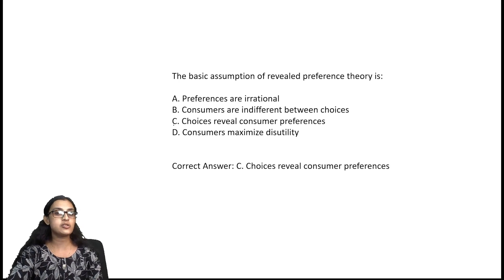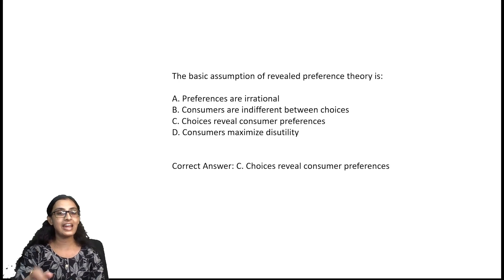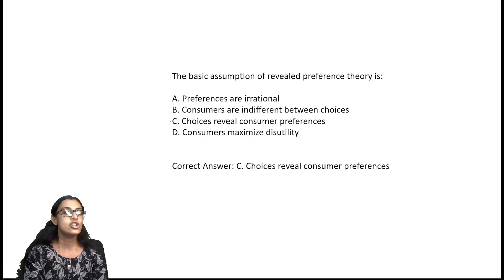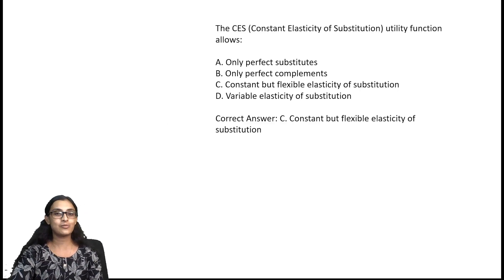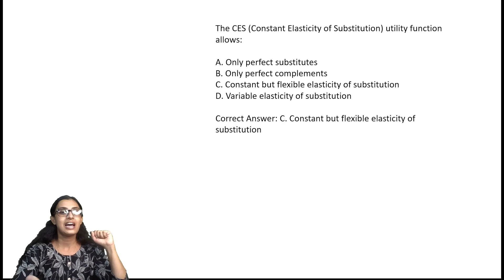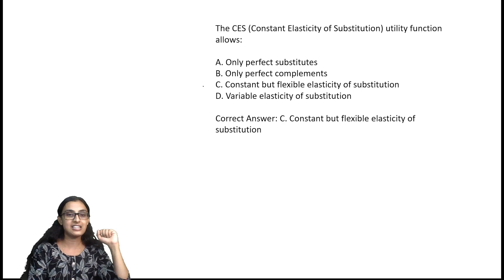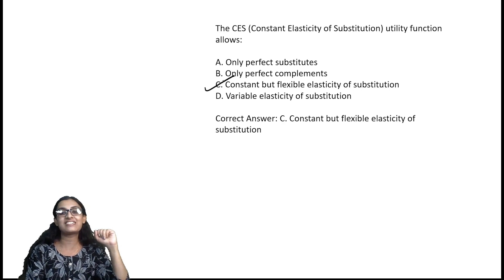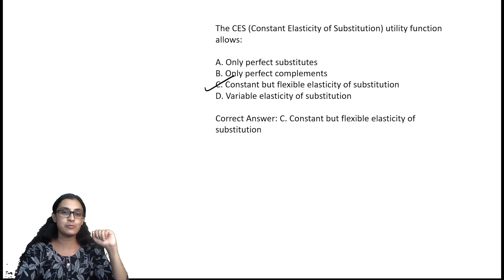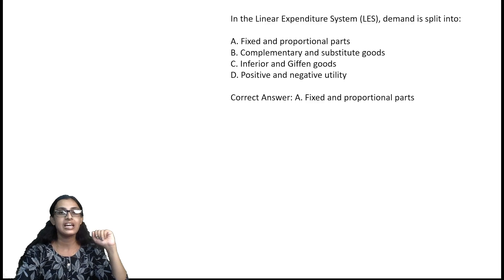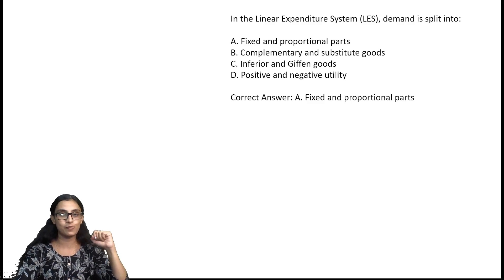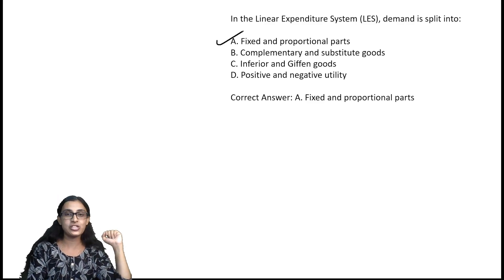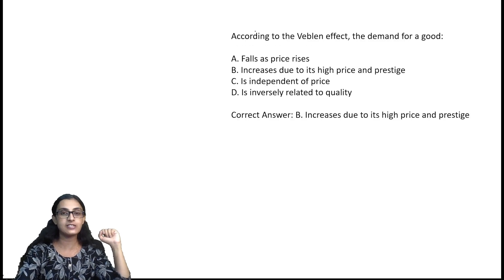The basic assumption of revealed preference theory — the right answer is that choices reveal consumer preferences. The CES utility function allows constant but flexible elasticity of substitution. The linear expenditure system splits demand into fixed and proportional parts — the right answer is option A.